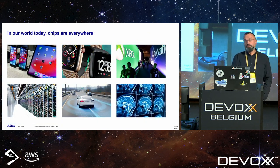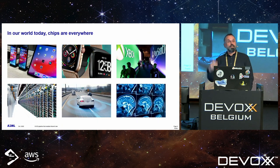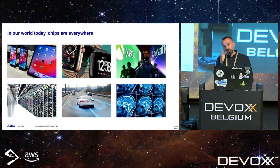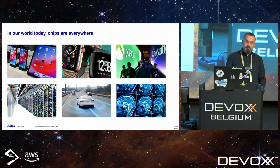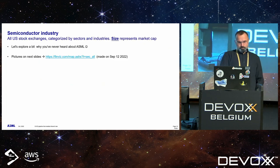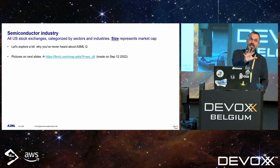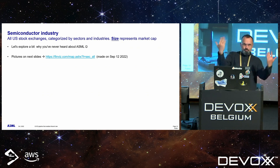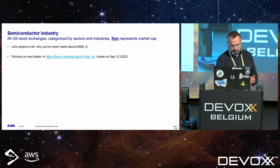You already have a bunch of electronic devices on you. Fun fact: at least 85% of the chips in those devices are made on ASML machines — at least.